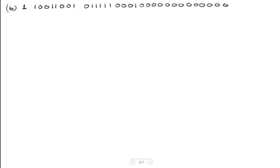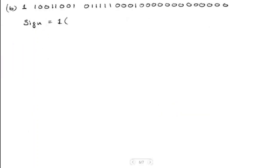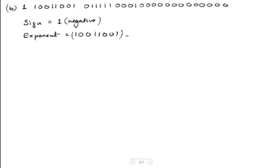We're done writing the binary number from the question. Now the sign bit is equal to 1, which means it's a negative number. Then we have to write down the exponent, which is 10011001, and this in decimal is equal to 153.